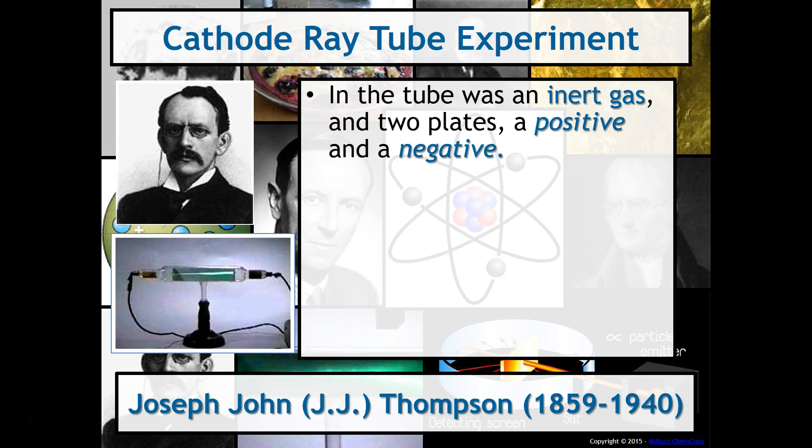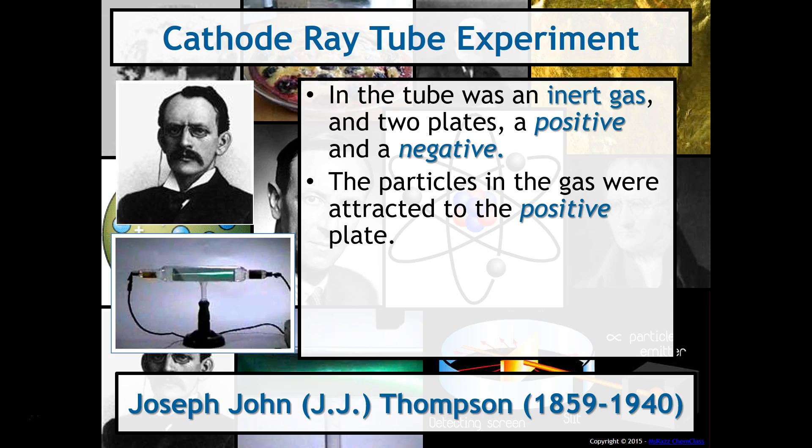So the cathode ray tube experiment, we had an inert gas, which means just a gas that doesn't react, and it had two plates, a positive and a negative. The particles in the gas were attracted to the positive plate.